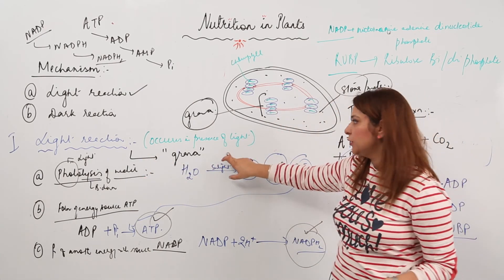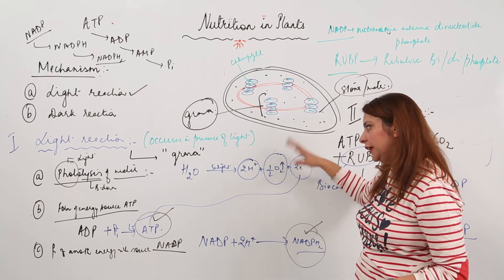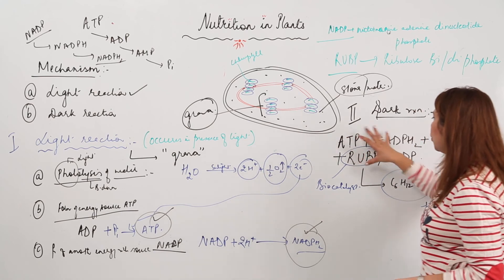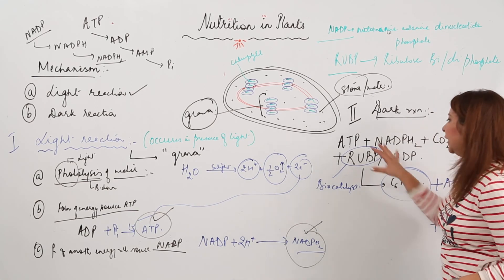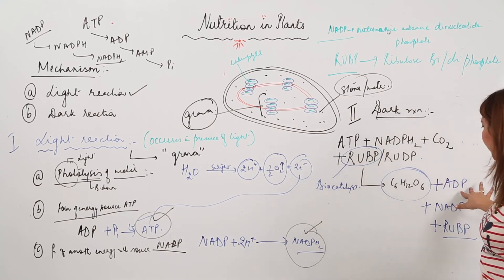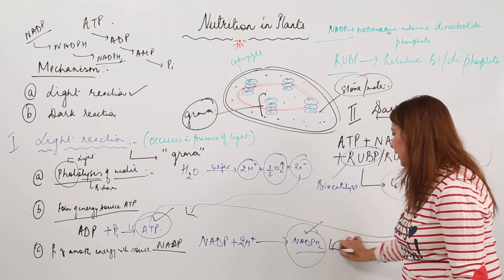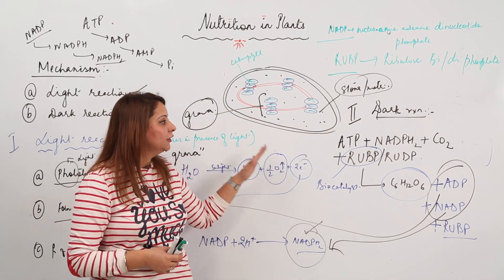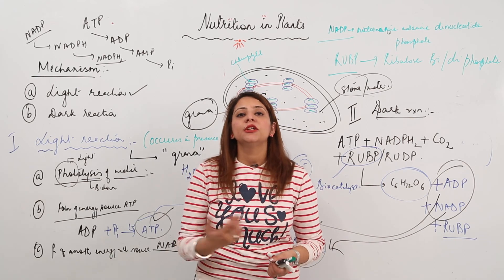To summarize the mechanism of photosynthesis: the light reaction occurs in the presence of light and involves three steps — photolysis of water producing 2H+, ½O2, and 2 electrons; formation of ATP using the electrons; and formation of NADPH2 using the 2H+. These energy sources then combine with CO2 along with the bio-catalyst RuBP in the dark reaction to form glucose. The used forms ADP and NADP cycle back to be converted again into ATP and NADPH2. Through photosynthesis, green plants synthesize food, which sustains all life directly or indirectly.